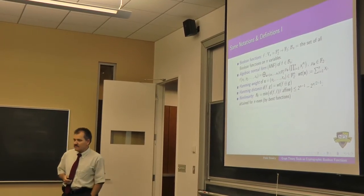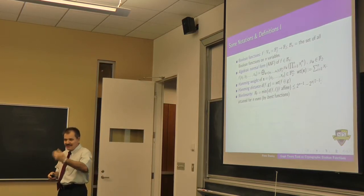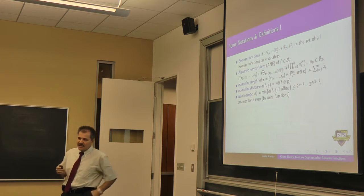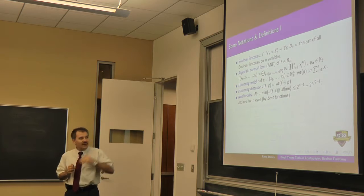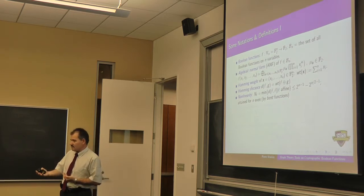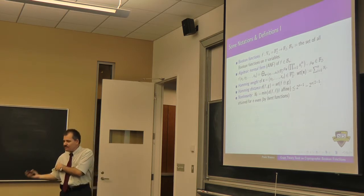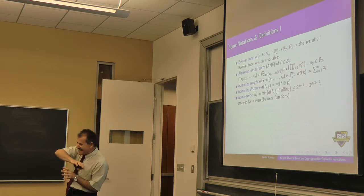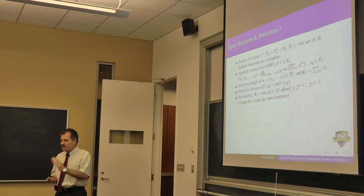Nonlinearity has been recognized since the 70s as a very necessary ingredient in any crypto system. Nonlinearity could be either the algebraic degree — how far away from linear functions — or the nonlinearity as a distance measure. The nonlinearity of a function is the minimum distance between the function and the entire set of affine functions. Simply put: how many bits do I have to change in this function to replace it by a linear or affine function?